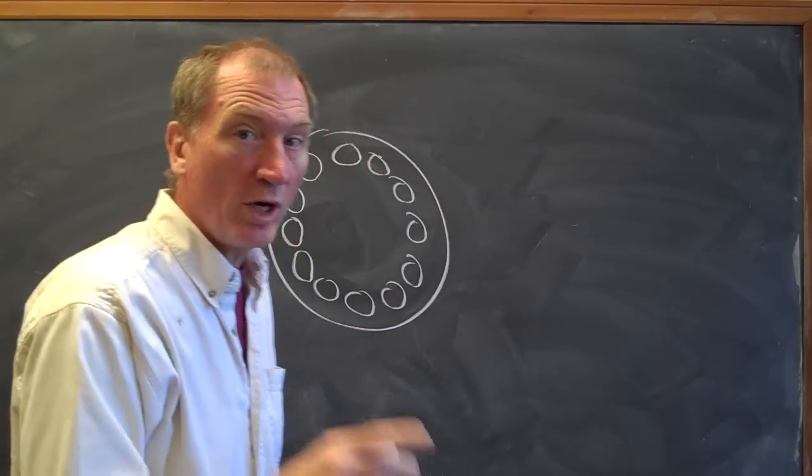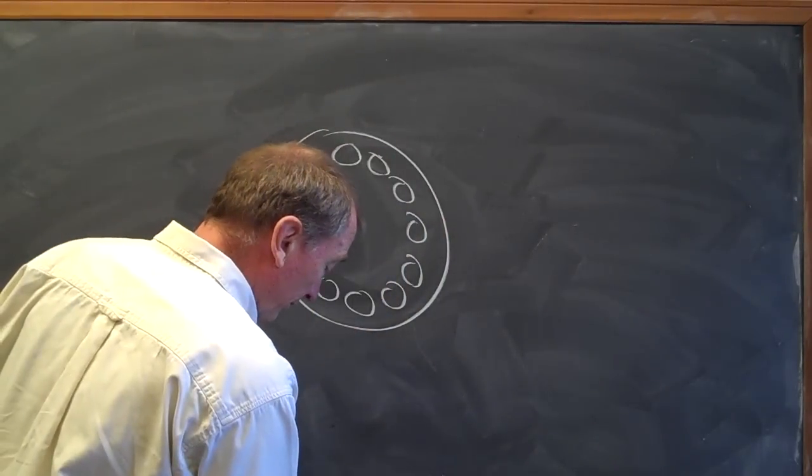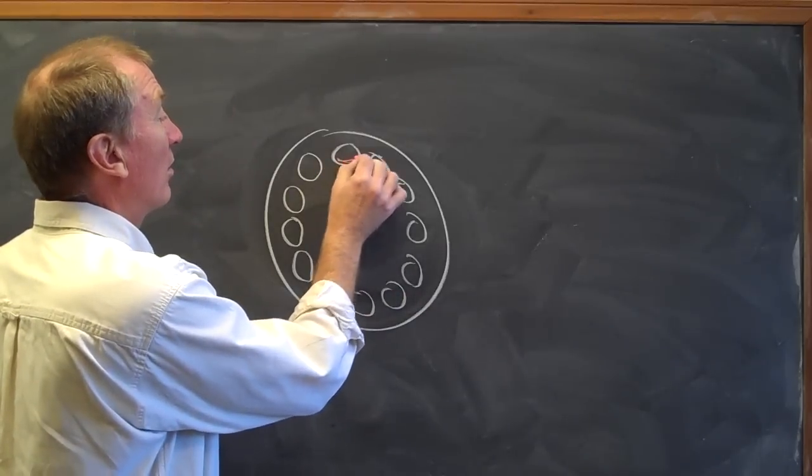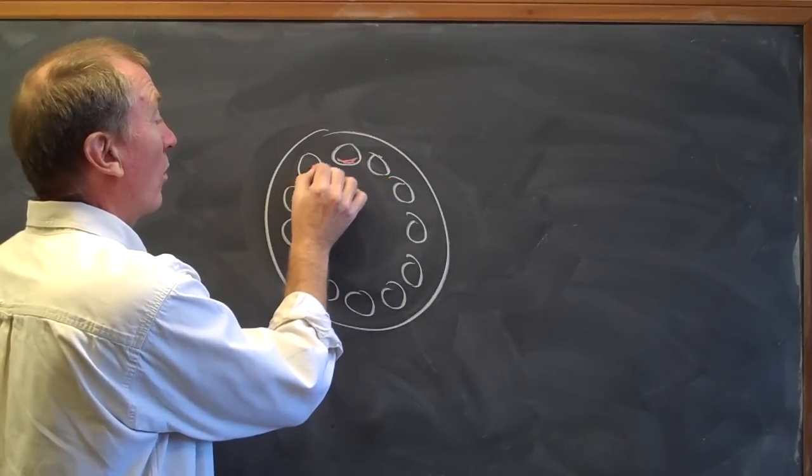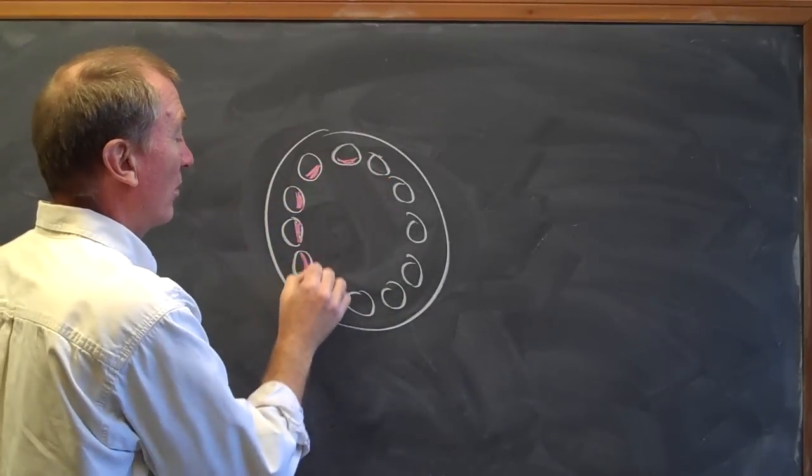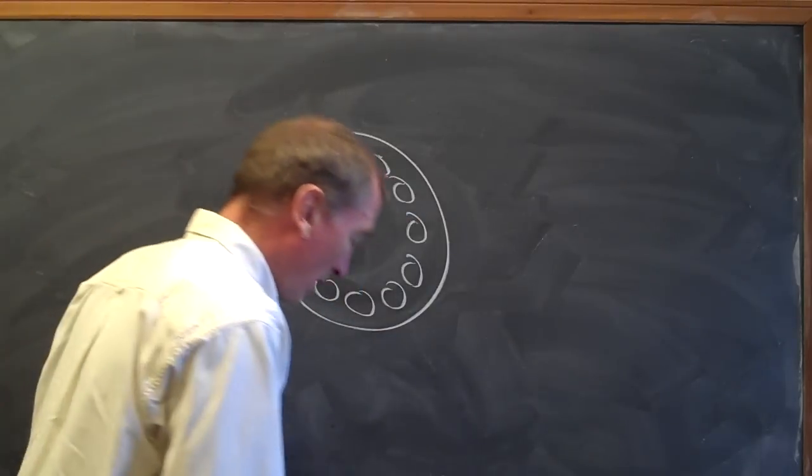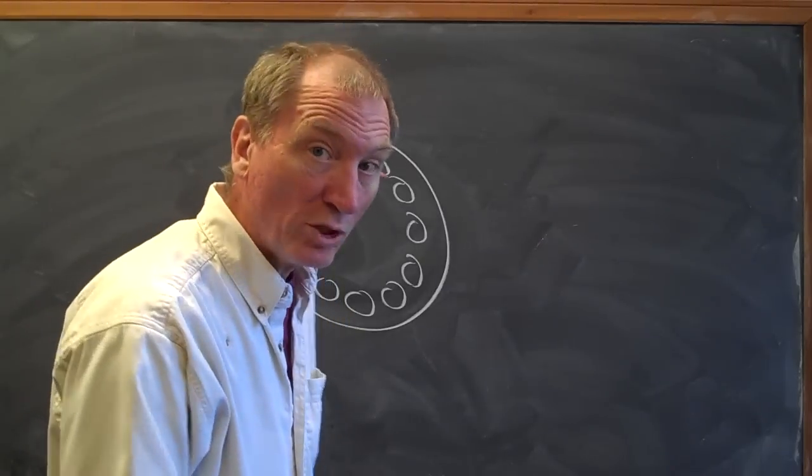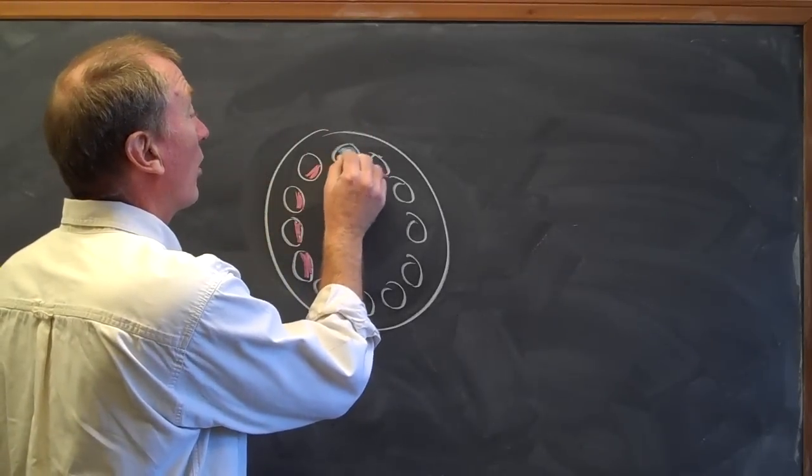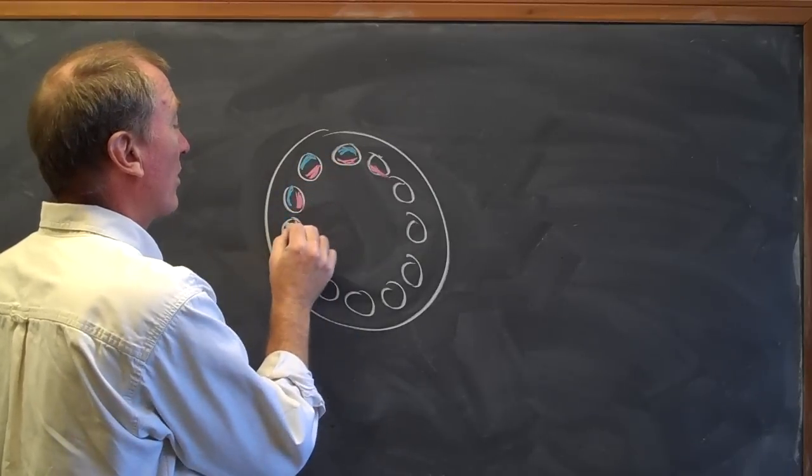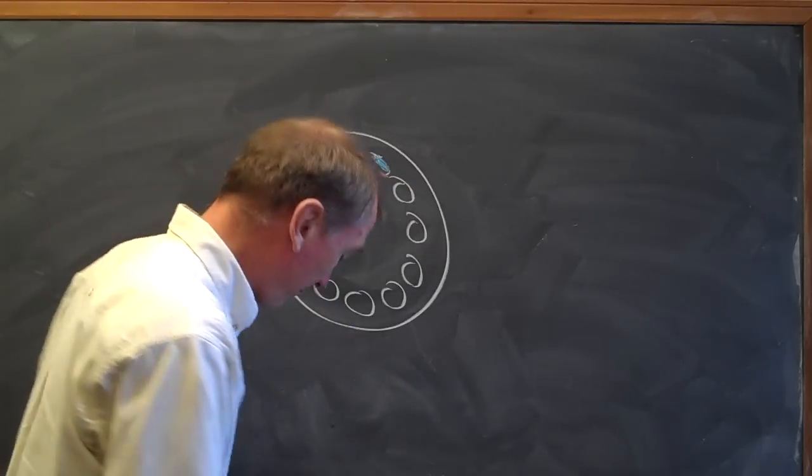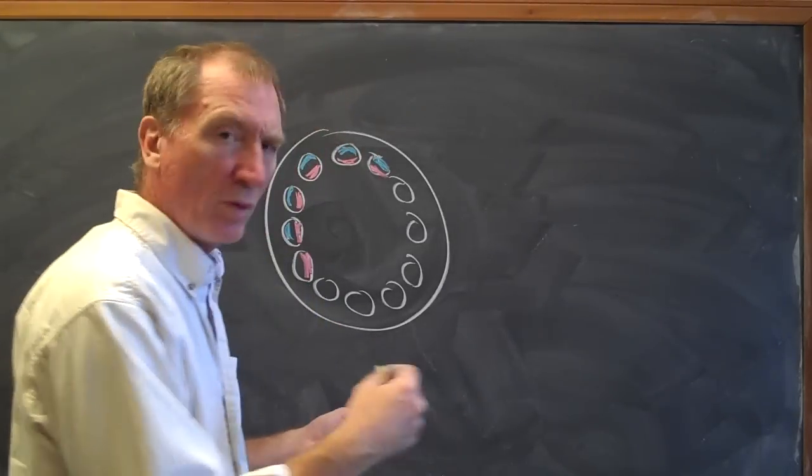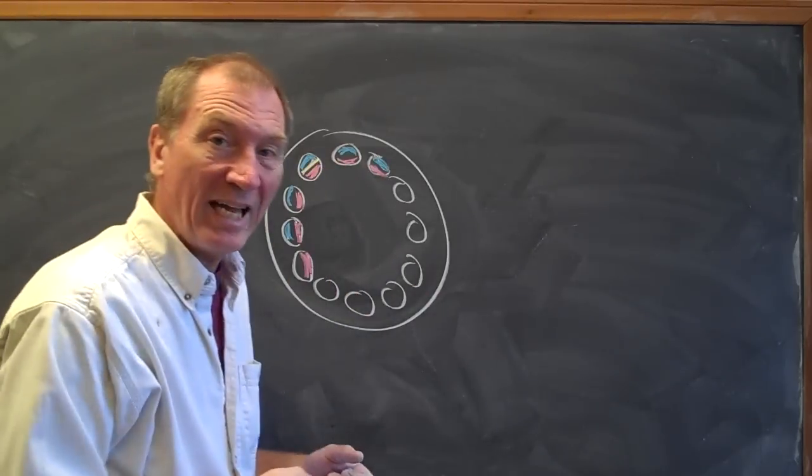And each vascular bundle is going to have three parts. It's going to have xylem toward the inside, and it's going to have phloem toward the outside, and what's usually there is cambium.